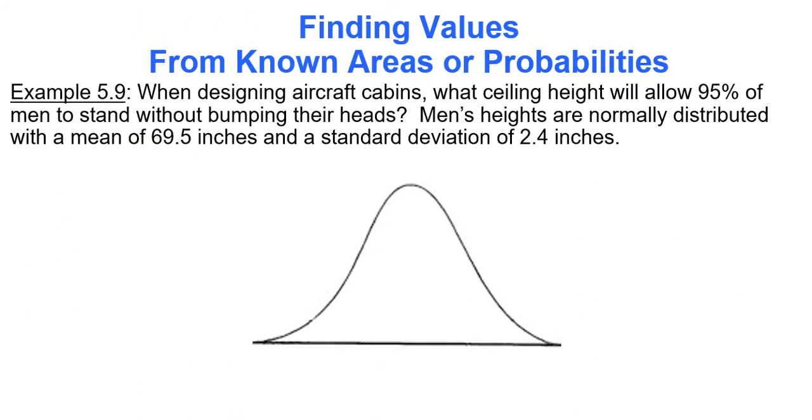So now let's find values from known areas or probabilities. When designing aircraft cabins, how often do we do that in our daily lives? Or should I say, how often do we almost hit our heads on airplanes in our daily lives when we're standing up in the aisle way when we're flying? What ceiling height will allow 95% of men to stand without bumping their heads? Men's heights are normally distributed with a mean of 69.5 and a standard deviation of 2.4. And they use men instead of women simply because men have a tendency on average to be taller.